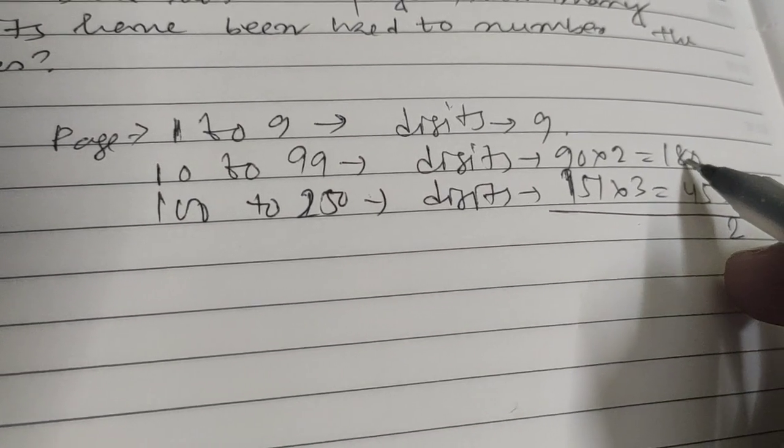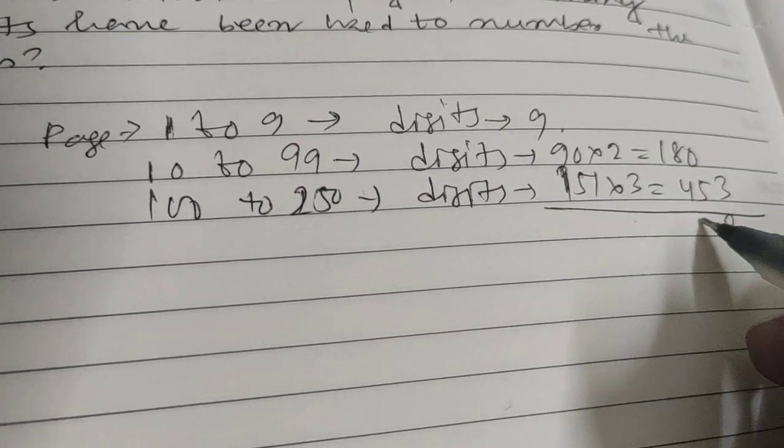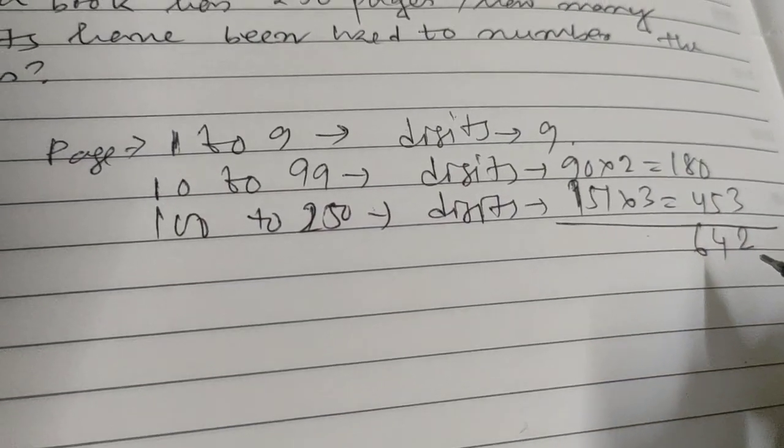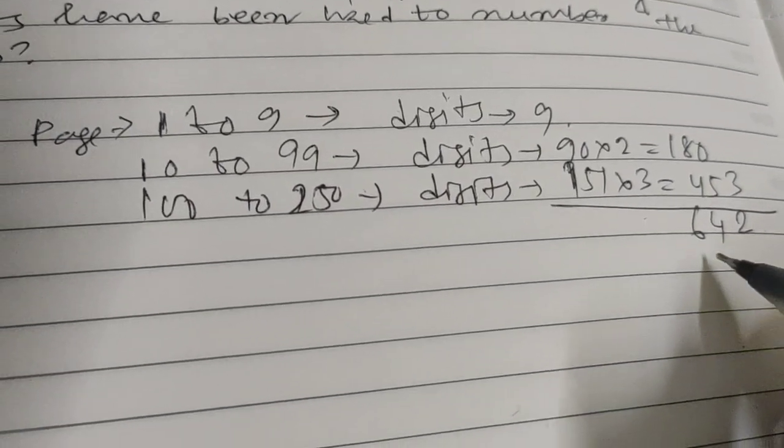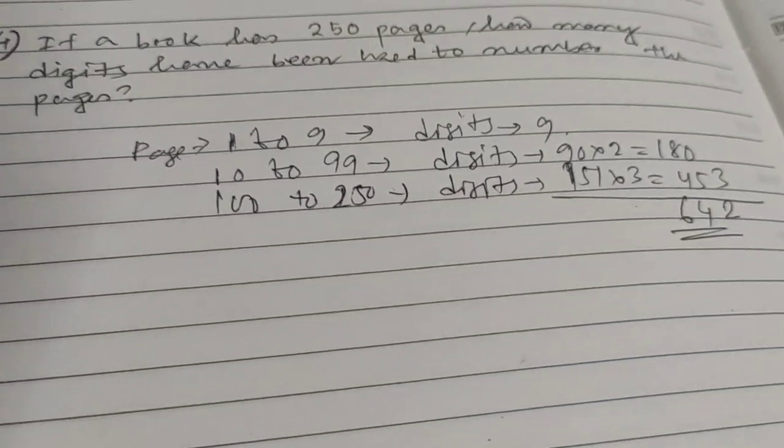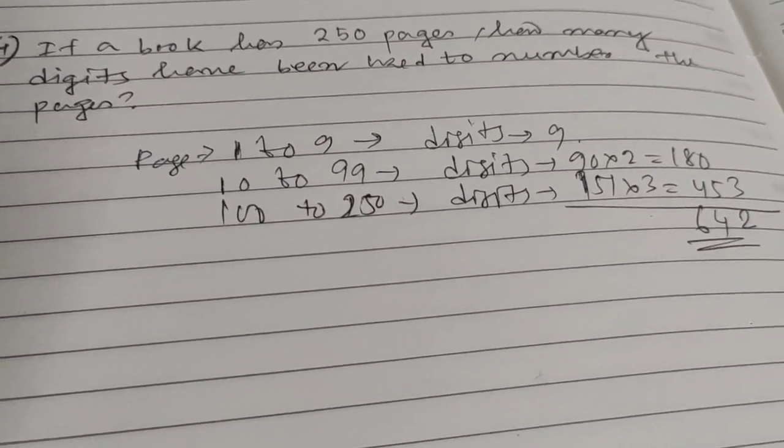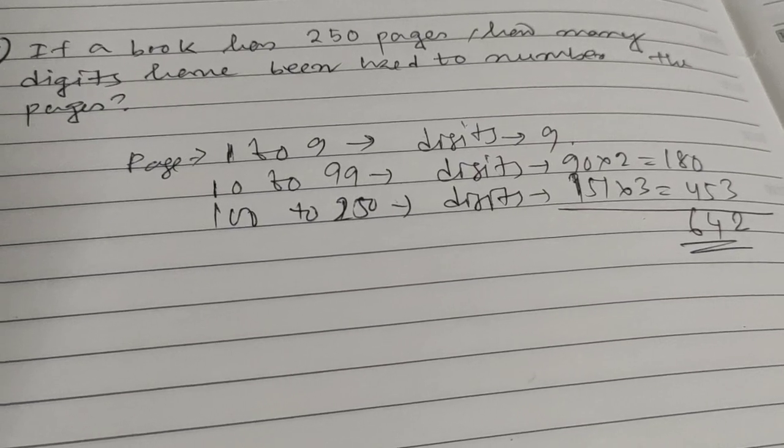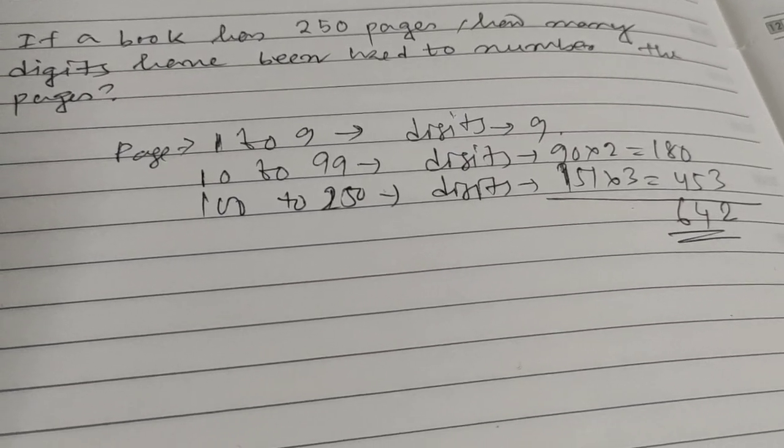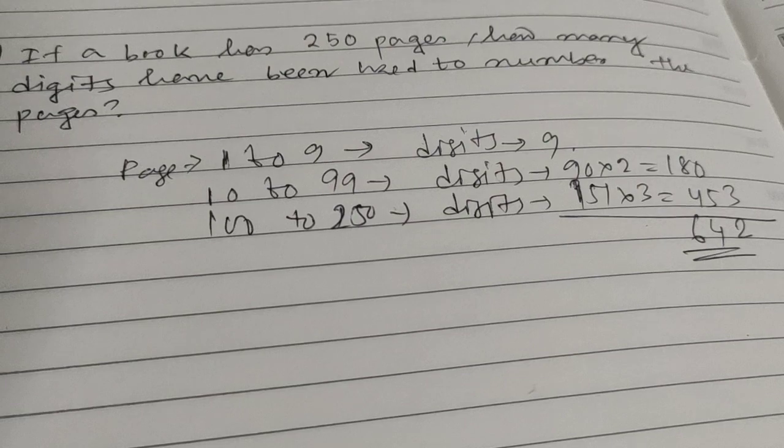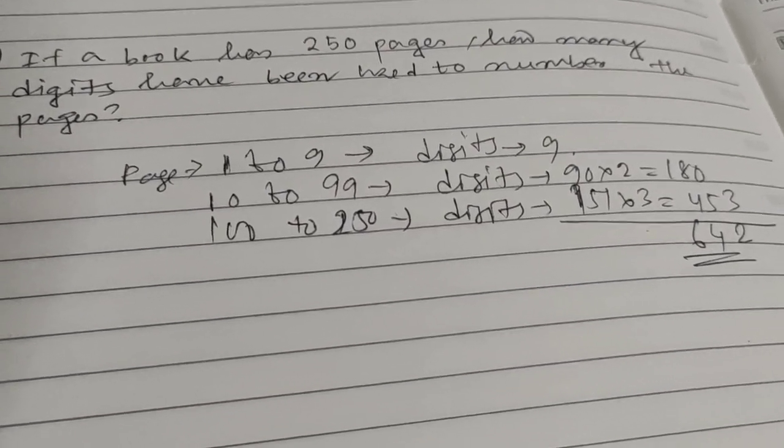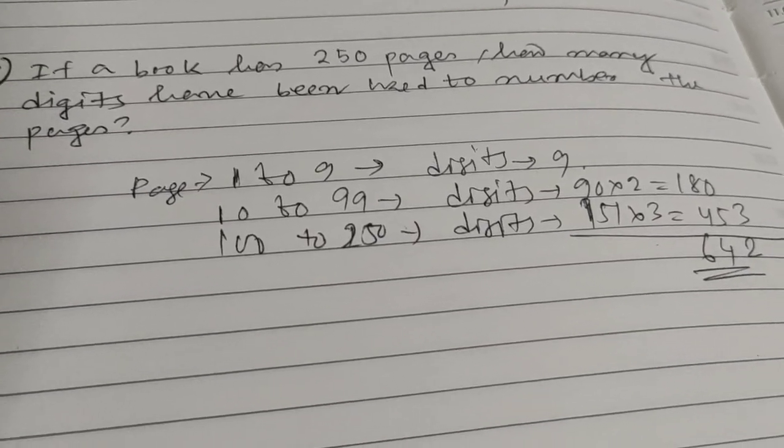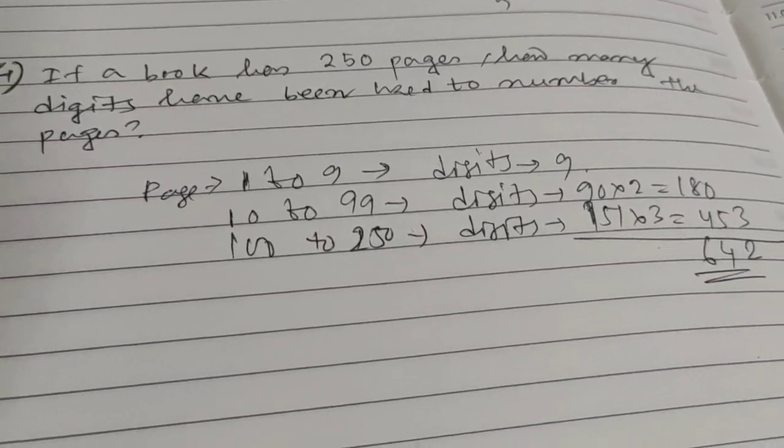So 642 digits we will use for a book with 250 pages. This is the concept. If you have any questions, you can write in the comment section. Thank you.